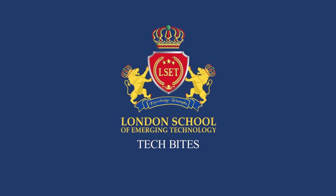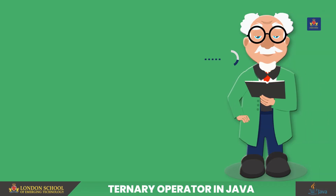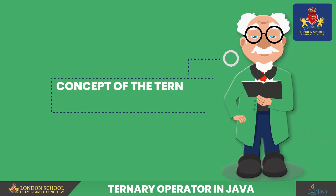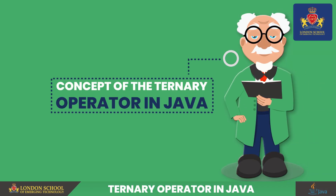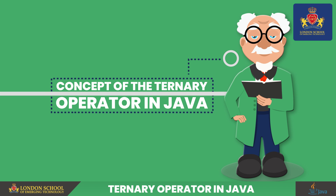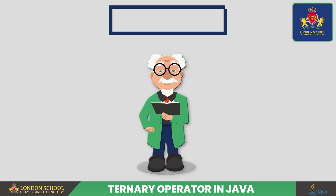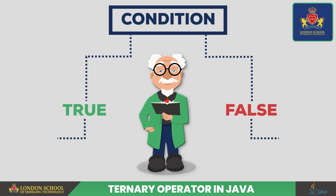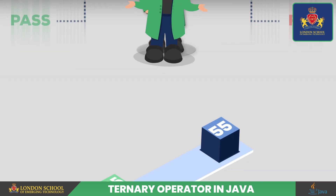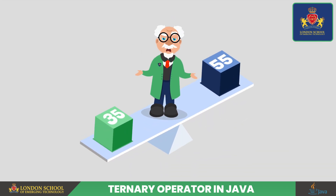Welcome to our TechByte. Today, we will delve into the concept of the ternary operator in Java. The ternary operator, also known as the conditional operator, provides a shorthand way of writing if-then-else statements in Java. Let's explore how it works with an example.